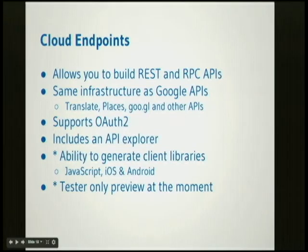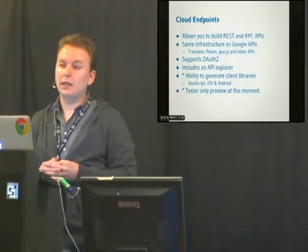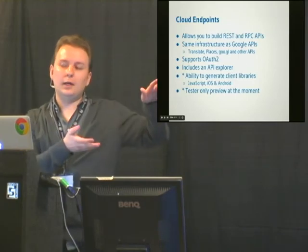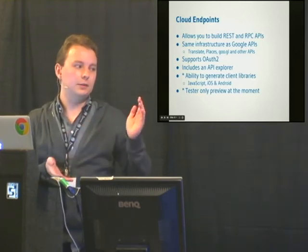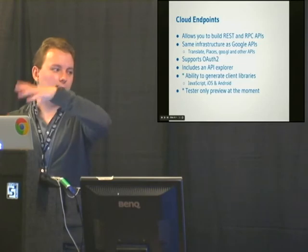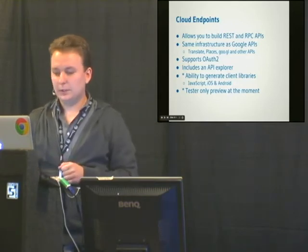Another cool thing that came out this year — still in testing — is Google Cloud Endpoints, which I'm hoping will become an experimental App Engine API soon. It allows you to build REST and RPC APIs using the same infrastructure as the Google Translate API and the Google URL Shortener, and it supports OAuth2. It has an API Explorer for the APIs you build, and an interesting feature: the ability to generate client libraries. You write your API, run a few terminal commands, and it generates client libraries for JavaScript, iOS, and Android. You take the generated library, put it in your Android app, and it's ready to consume your Python-built API. It's a trusted-tester-only preview at the moment, but it's really exciting.